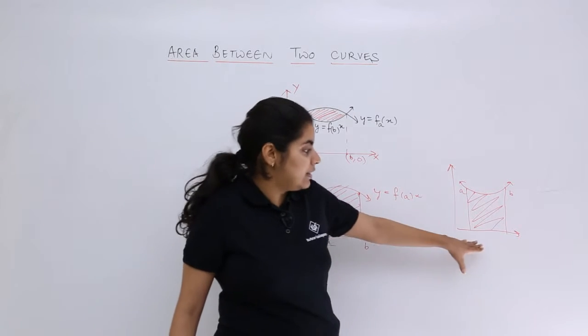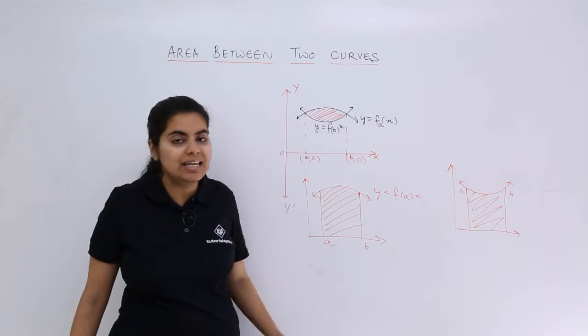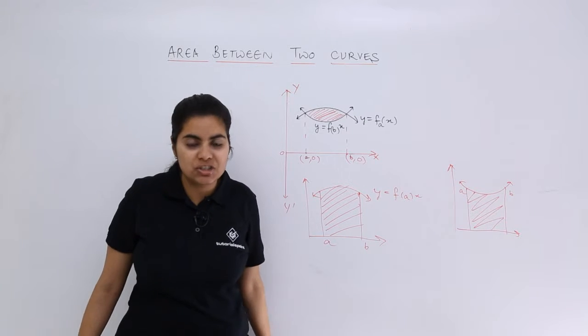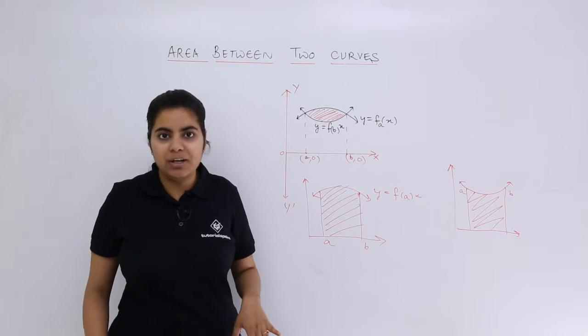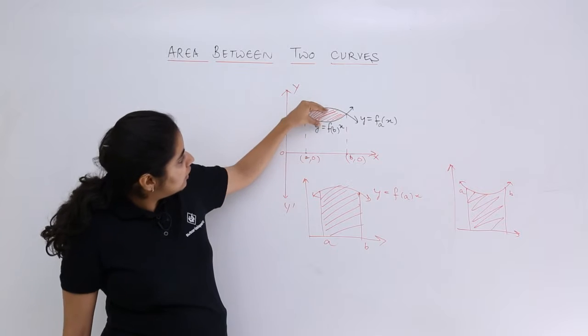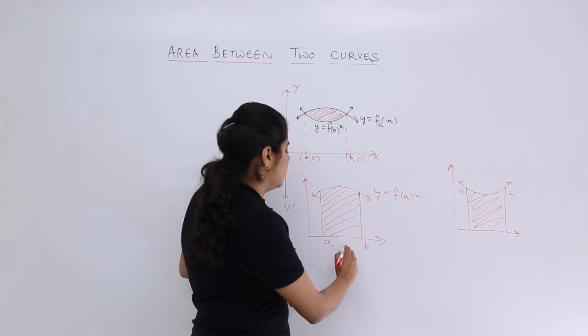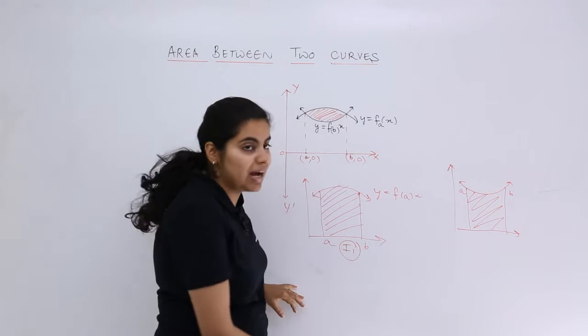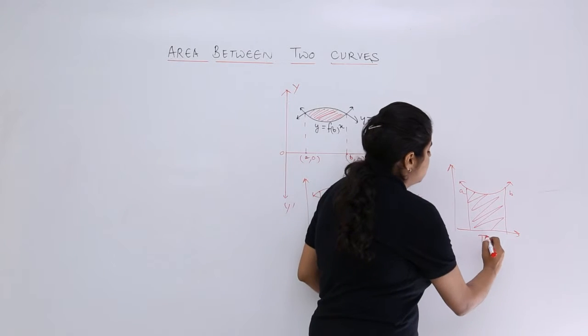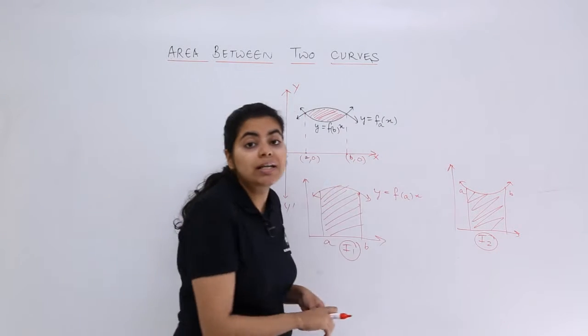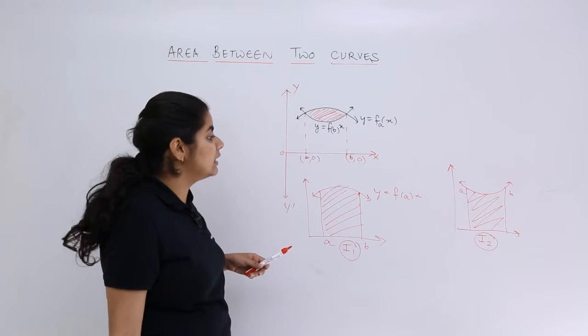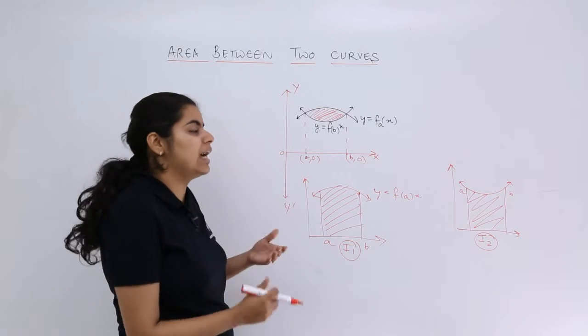So these two are there. These two different areas I can calculate by integration. After that, what do I do? I see that this area is I1 integration area minus I2 integration area, because what is common and what is uncommon I have to see.